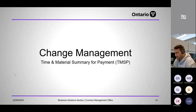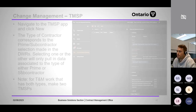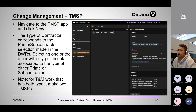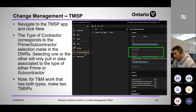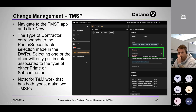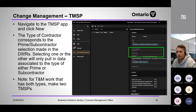Moving on to the Time and Material Summary for Payment — the TMSP. Navigate to the TMSP app, click New. You have the type of contractor again — prime or sub — related to what you indicated on each DWR. You also have the change order field, but not the CR field: DWRs can be linked to CRs or change orders, but only change orders can have TMSPs. A TMSP is essentially the price agreement for a change order — it comes in at the end to substitute and become the final price of the change.